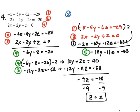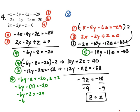Now that I've found Z, I'm going to use equation four to find Y. Equation four is negative six Y minus Z equals negative 20, and I'll substitute Z equals 2. So I have negative six Y minus two equals negative 20. Negative six Y equals negative 18. Dividing both sides by negative six, Y equals 3.